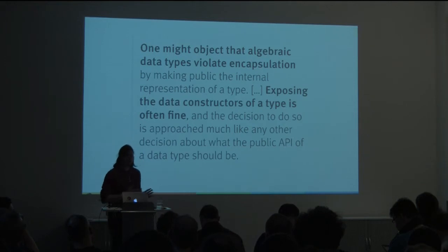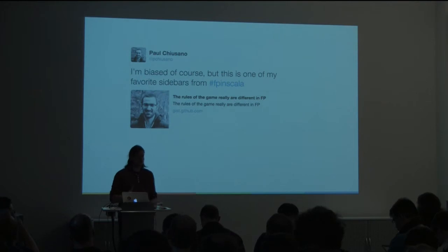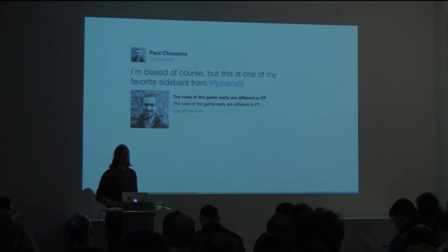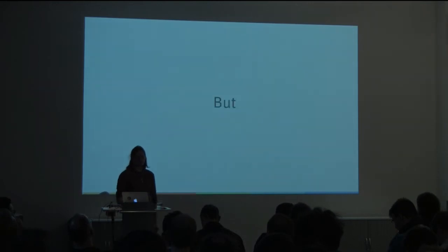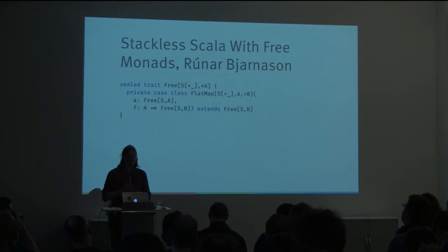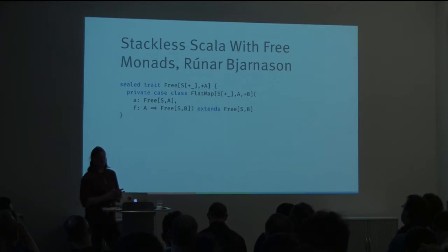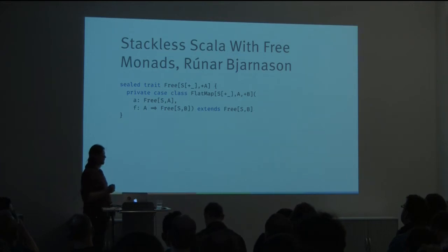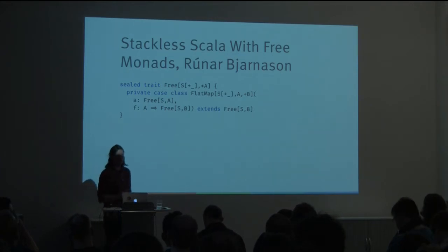I think this is well-argued in the book and it makes a lot of sense. One of the authors, Paul, tweeted a few years back that this is still one of his favourite sidebars from the book. But you remember the other author, Rúnar — a few years even before the book, he wrote a paper called Stackless Scala with Free Monads. In that paper, he writes an implementation of free monads in Scala, and in doing that he discovers a problem.